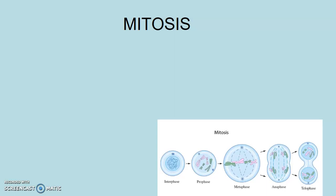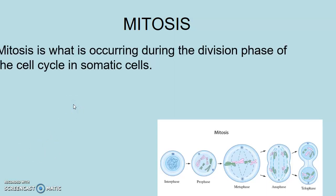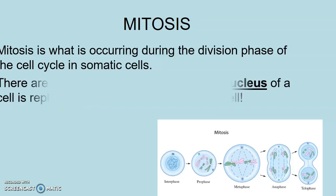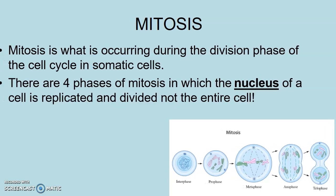Today we're going to move on to what happens when a cell is actually ready to divide. So let's say we have our cell here, and it's gone through interphase — G1, S, and G2 has just occurred, and now it's ready to divide. And when this occurs, we have this process called mitosis. So when mitosis is occurring, that is what happens when a somatic cell is ready to divide.